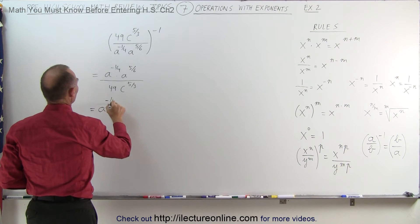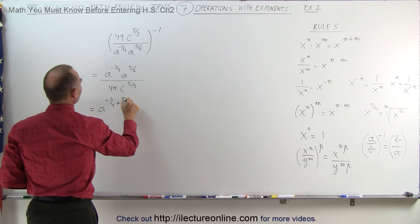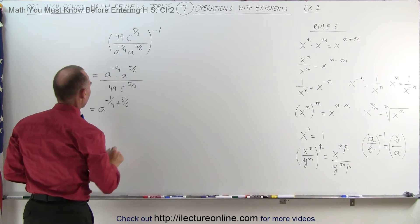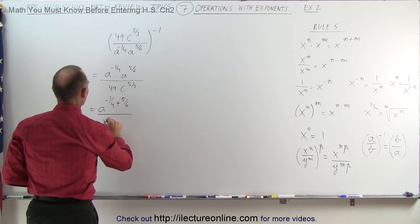a to the minus 1 fourth plus 5 over 6, and divided by 49c to the 5 thirds power.